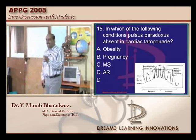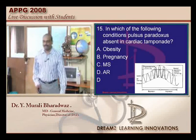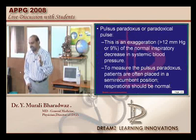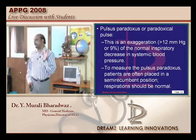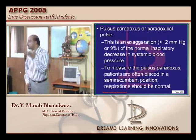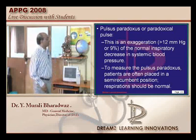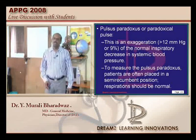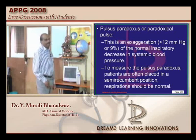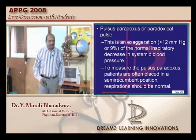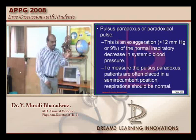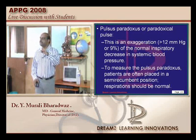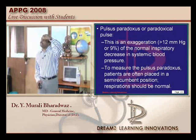Pulsus paradoxus is a feature of cardiac tamponade, as all of you know very well. Now if cardiac tamponade occurs in certain special situations, though there is a tamponade, still there is no pulsus paradoxus. What are those situations? But before that, what do you mean by pulsus paradoxus? Normally, whenever we have an inspiration, there is a decrease of the systemic blood pressure — BP will be lower on inspiration and a little higher on expiration.